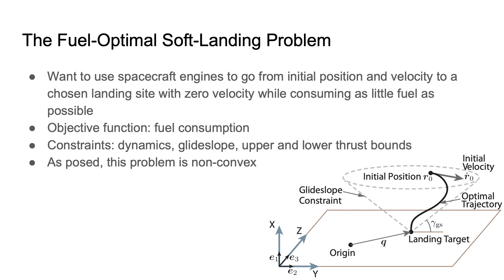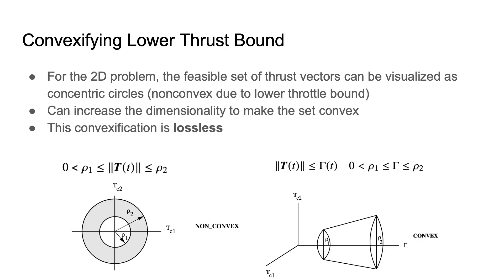As posed, this problem is non-convex, mainly due to this lower thrust bound. If we simplify this problem into two degrees of freedom, we can visualize the set of feasible thrust vectors as two concentric circles, where the distance from the origin represents the throttle or thrust magnitude and the angle from the y-axis represents the direction of the thrust vector. In this set, we can see that any two points do not have a clear line of sight with each other because of this hole in the center.